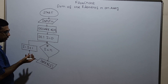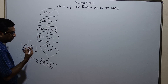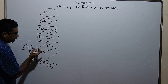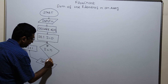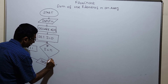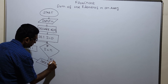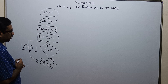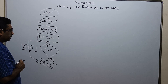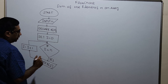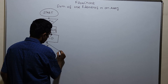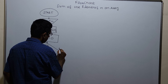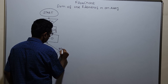So for an array of size n, the value starts from 0 to n minus 1. So the input will get stored here. If i less than n is true, I will store the value from a of 0 to n minus 1. If it is false, I am leaving the loop.